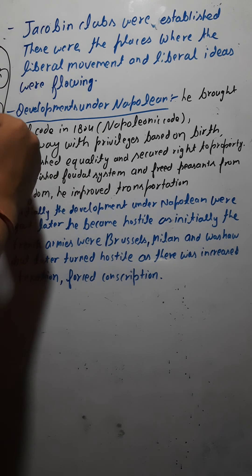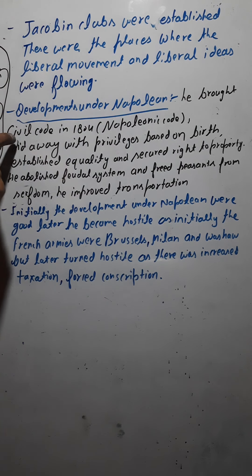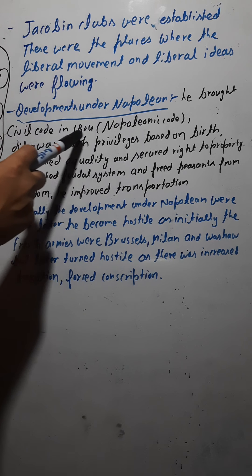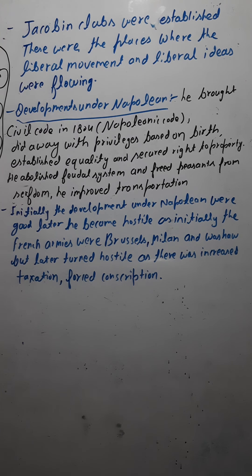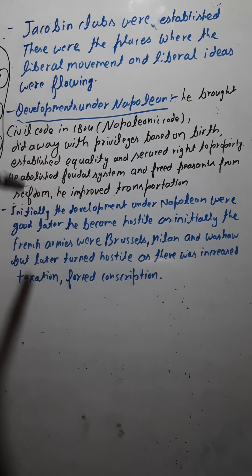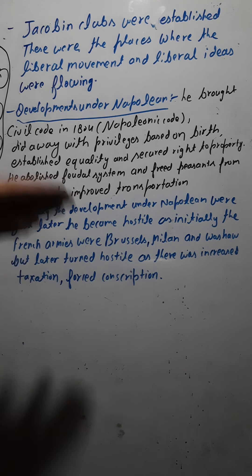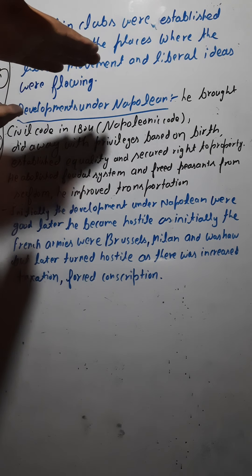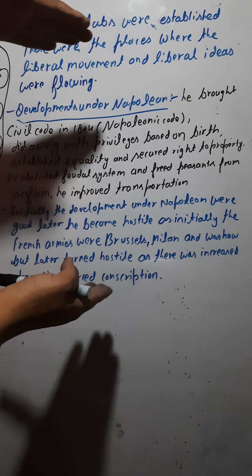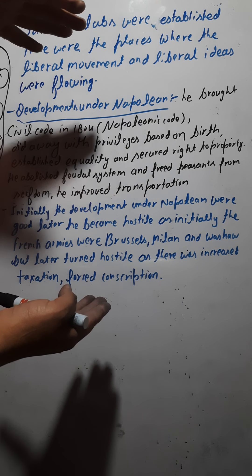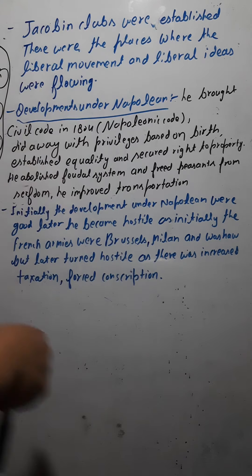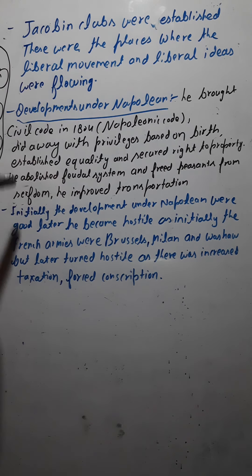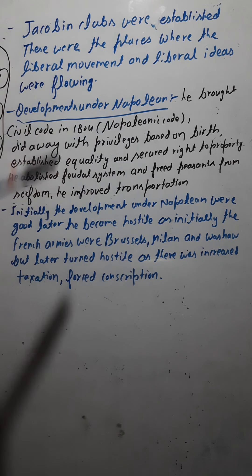When Napoleon came, there were some developments. He brought the Civil Code in 1804, also known as the Napoleonic Code. He did many good things. He did away with the privileges based on birth. France was divided into different categories of people, and a child born in a higher category had more rights than one born in a lower category. Napoleon abolished this, promoting equality.